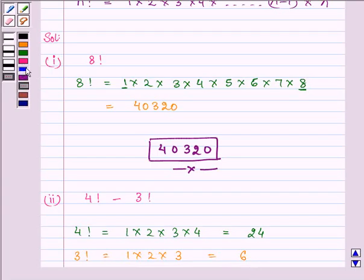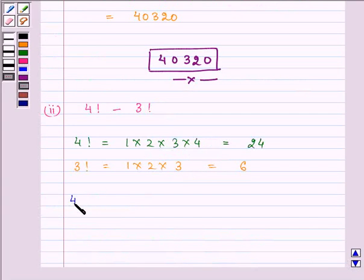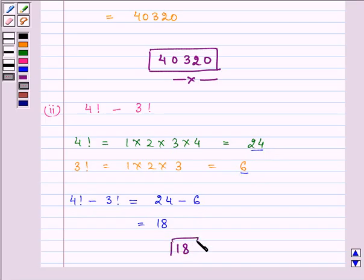Now we compute 4 factorial minus 3 factorial, which is 24 minus 6. Substituting the values, we get 24 minus 6, which equals 18. This is our required answer to the second part.